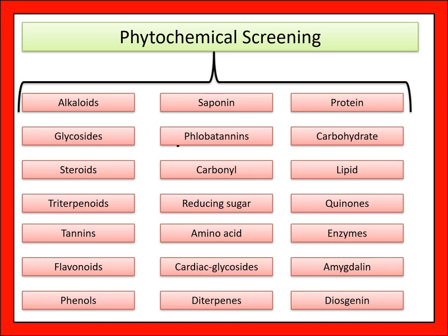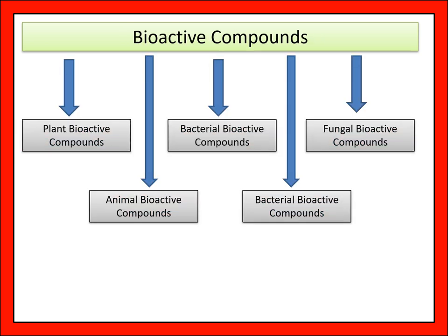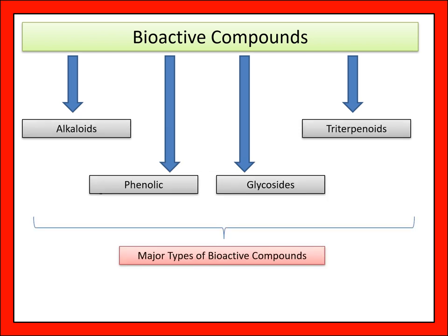Important phytochemicals include alkaloids, glycosides, steroids, triterpenoids, tannins, flavonoids, phenols, saponins, phlobatannins, carbonyls, reducing sugars, amino acids, cardiac glycosides, diterpenes, proteins, carbohydrates, lipids, quinones, and enzymes. Bioactive compounds are classified as plant, animal, bacterial, and fungal. The major bioactive compounds are alkaloids, phenolics, glycosides, and triterpenoids.